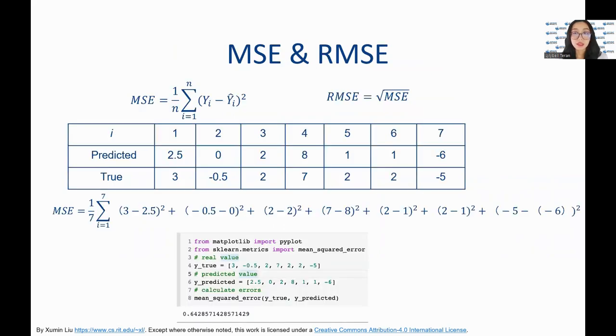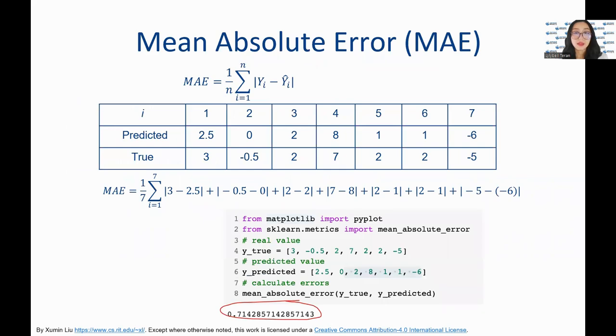MSE is computed based on the deviation between predicted and true values of y. RMSE is the square root of MSE. It has the same unit as y. MAE considers the absolute difference between the predicted value and the true value for each data record in the testing set.